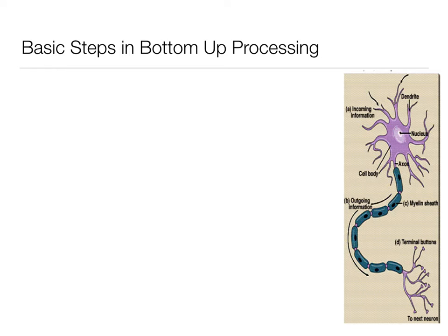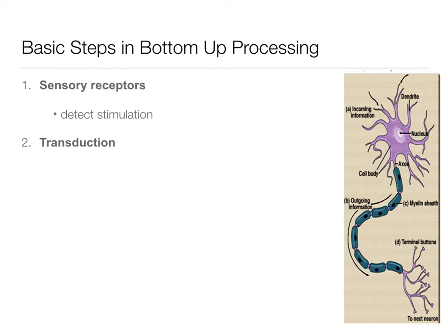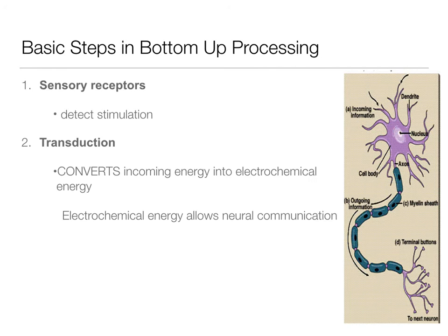Back to bottom-up processing. The basic steps go back to our friend the neuron. Our sensory receptors are specialized neurons that detect stimulation and convert it into a neural signal via a process called transduction. This converts the incoming energy - whether light, sound, touch, or taste - into an electrochemical signal. The neuron and synapse are just a circuit system, so we need that electrochemical information. That's what transduction is - converting incoming stimulation so neural communication can happen.